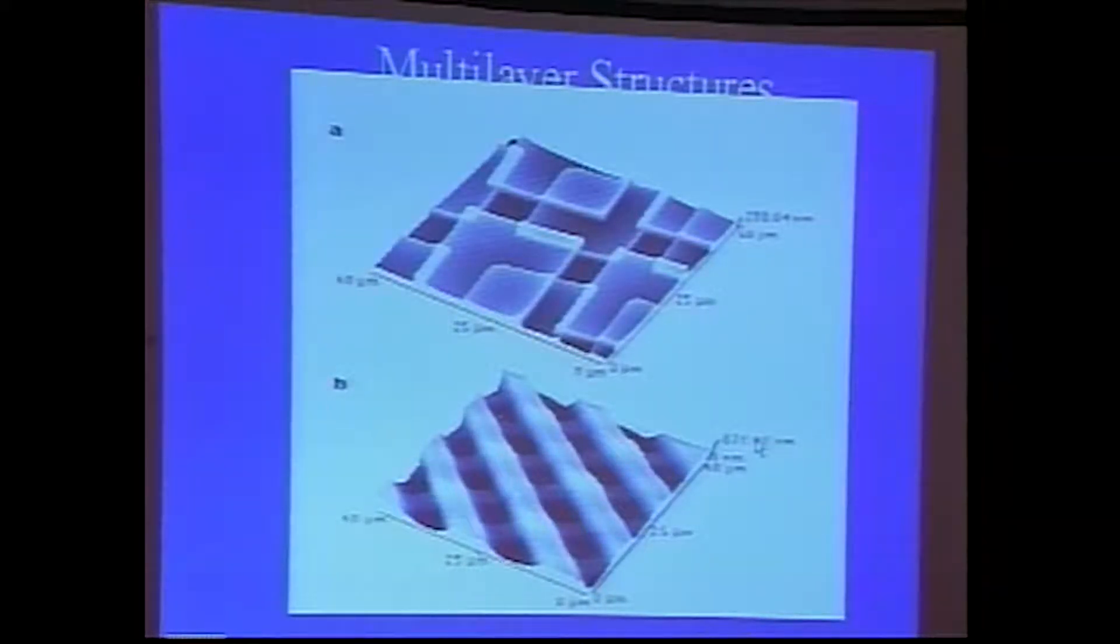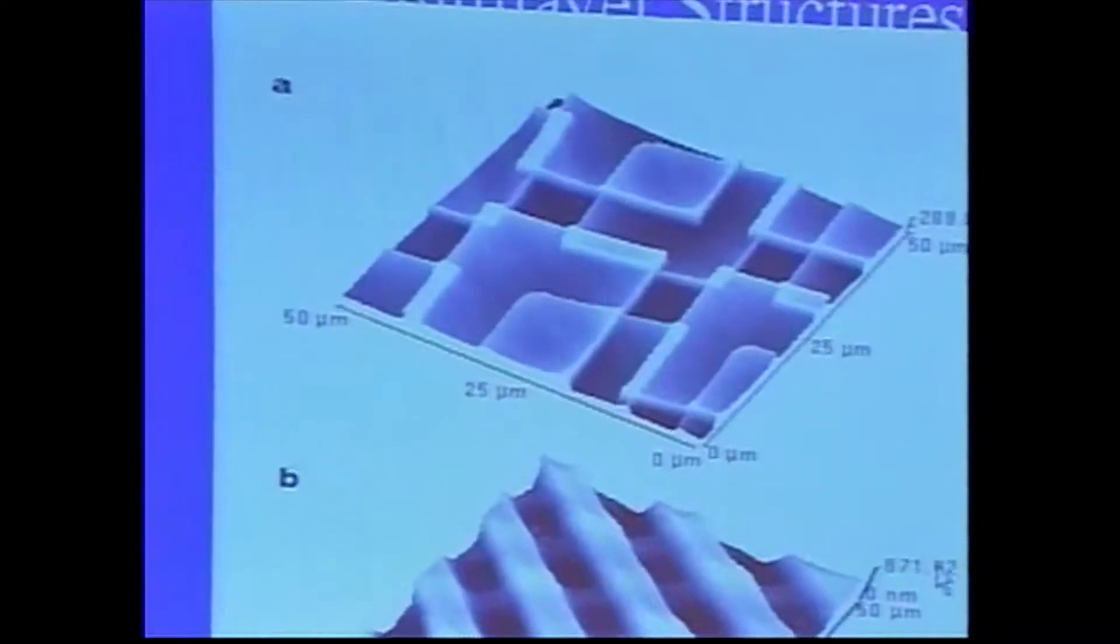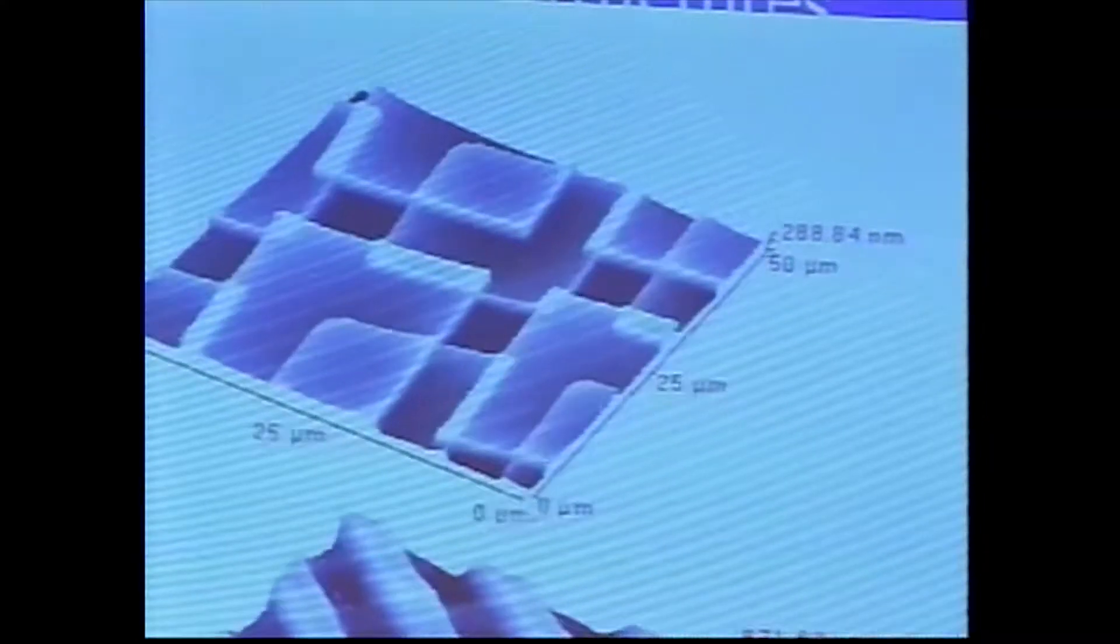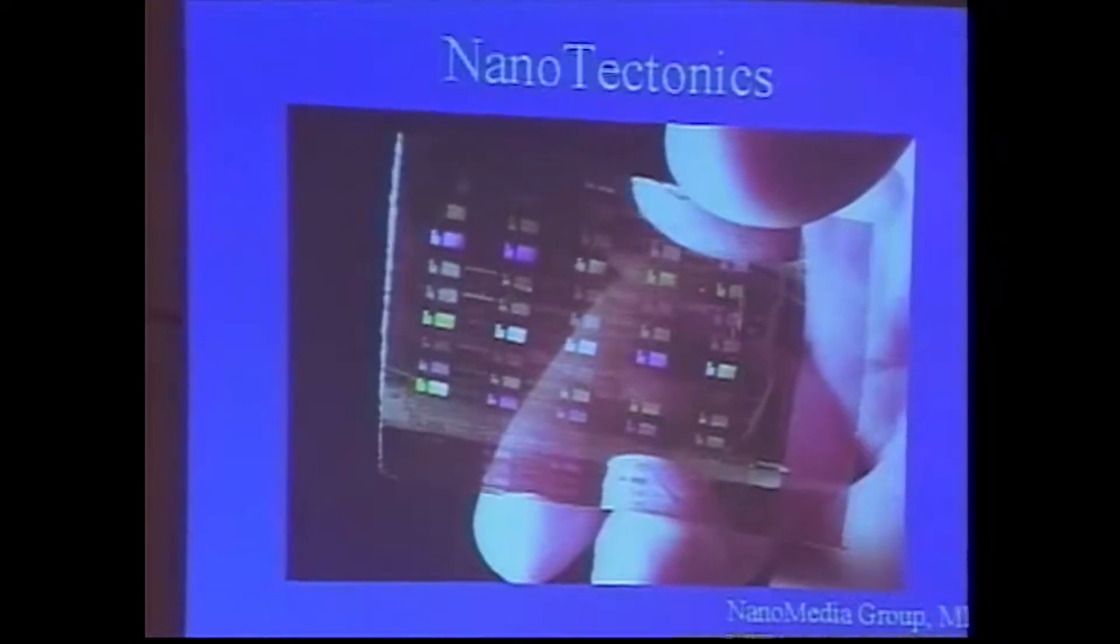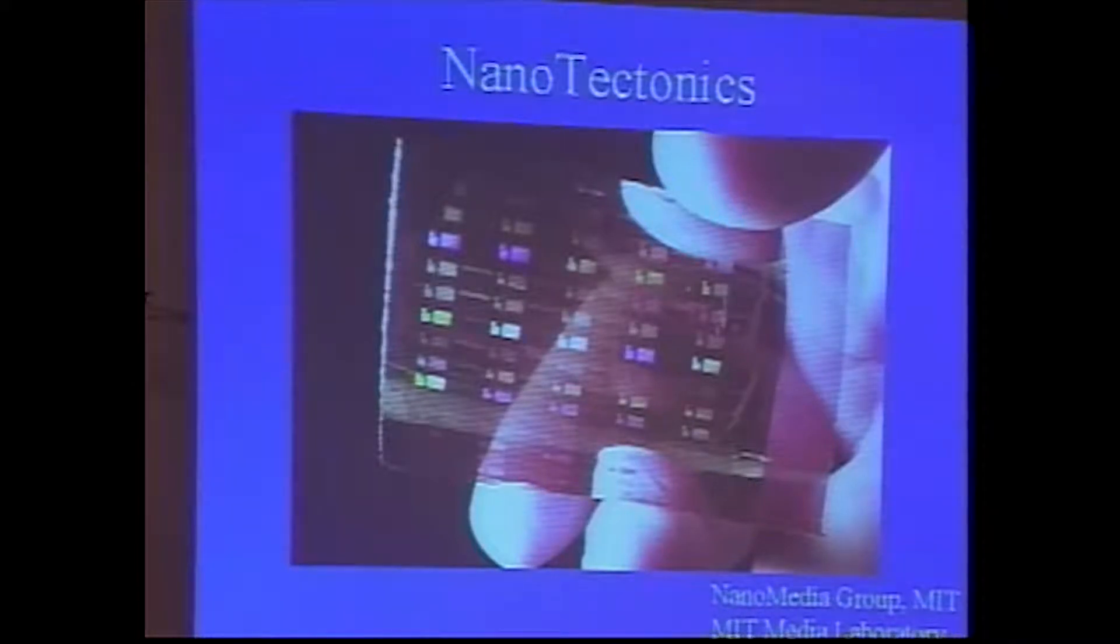One very important aspect is the ability to print vias, because you want to be able to go from layer to layer without any lithographic step. Here's some 200 nanometer structures. We've done recently some 100 nanometer structures. The integrity of the line, we can build working devices at 200 nanometers with full insulation between lines. The integrity of the line is probably good to at least 50 nanometers.